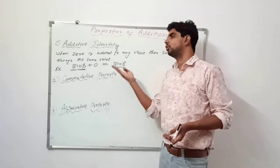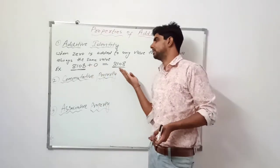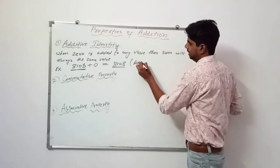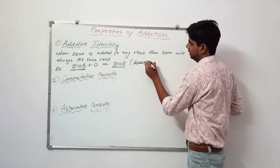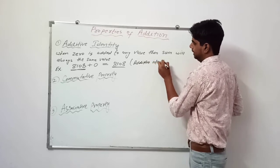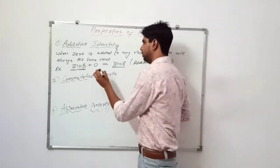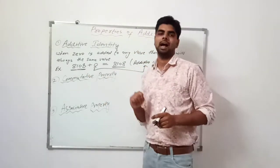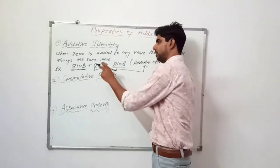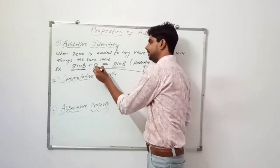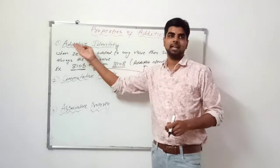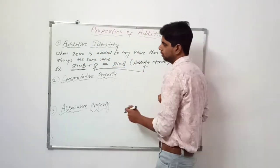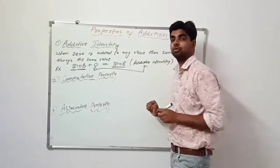Whenever we add 0 to any number, the result or sum will always be the same number. This property is known as the Additive Identity Property, and here 0 is also known as the Additive Identity. Now the second property is called the Commutative Property.